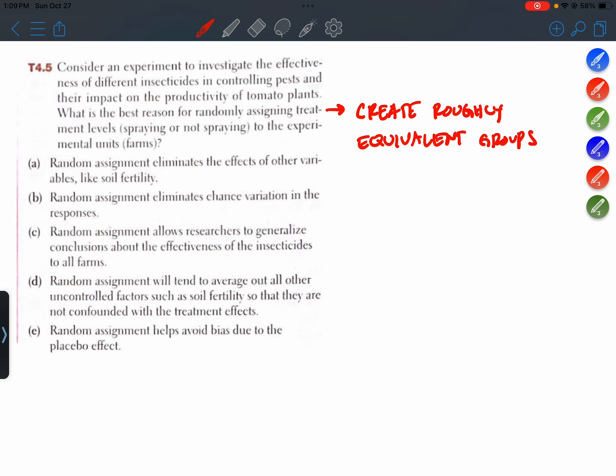So let's look at the answer choices and see if there's anything that sounds vaguely similar to creating roughly equivalent groups. Choice A: Random assignment eliminates the effects of other variables like soil fertility. I like it. Eliminates is a pretty strong word. I would say reduces. It reduces the effects. But let's keep reading.